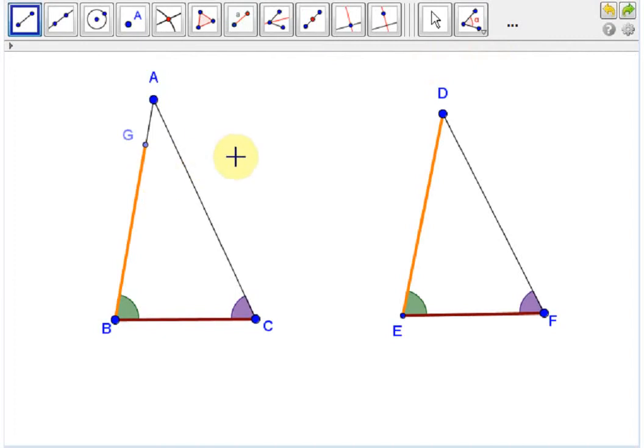We'll mark these two sides as having the same length, and furthermore, we'll connect vertex G to vertex C. By side-angle-side, we have two congruent triangles: GBC and DEF.